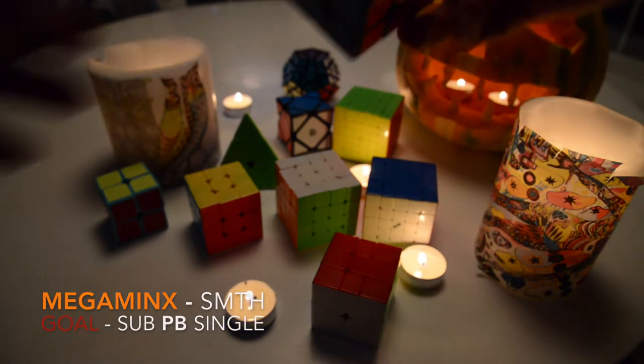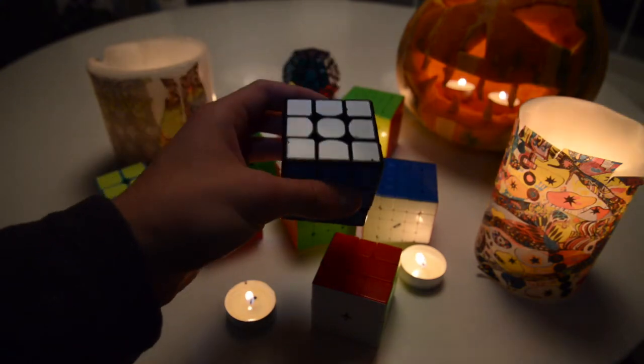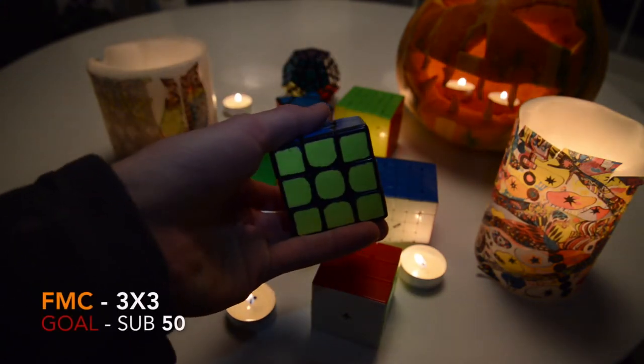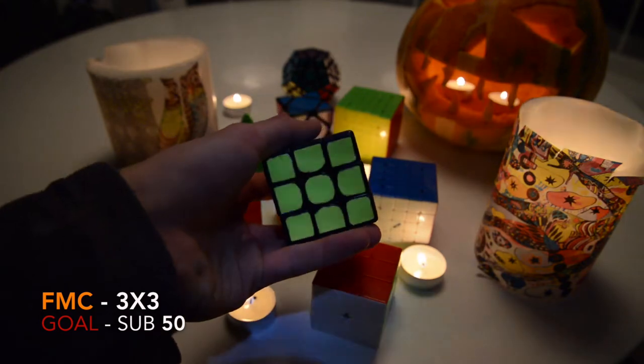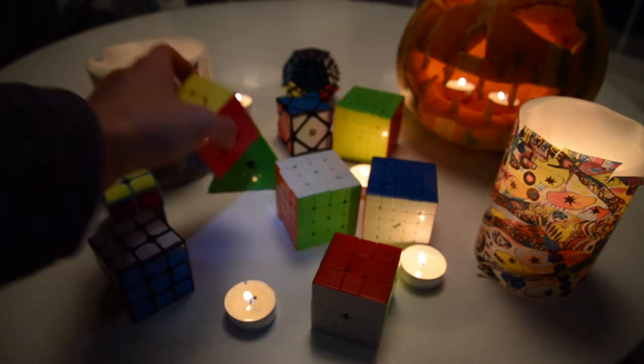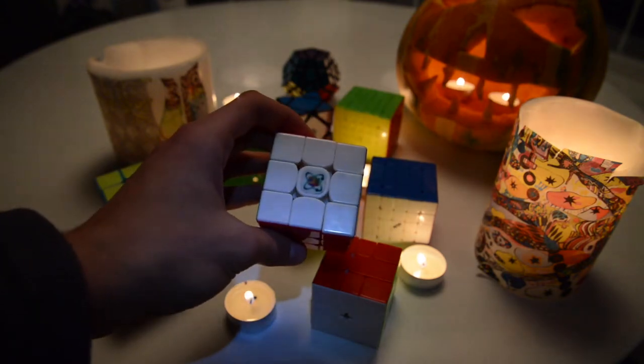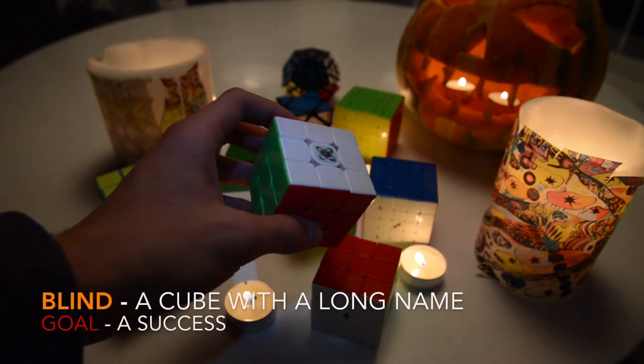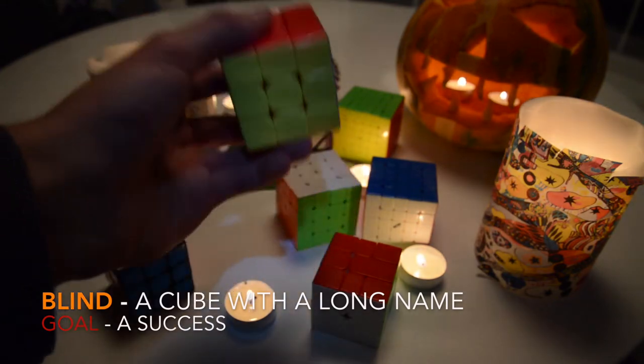Next up it's fewest moves. I'll be using different 3x3s and I don't have a goal in fewest moves. But next up is blindfolded. For blindfolded I'll be using the good old trusty Raylong GTS version 2 and my goal is to get a success. That is all.